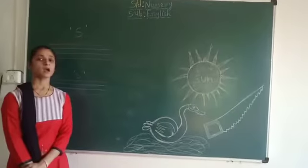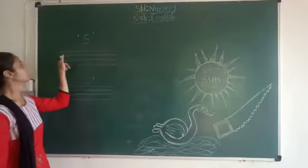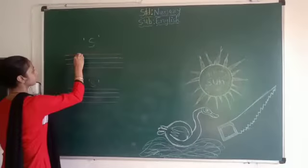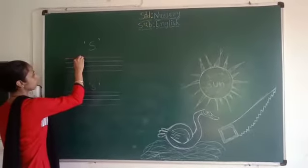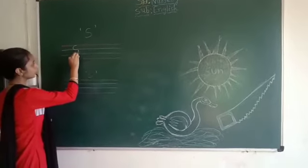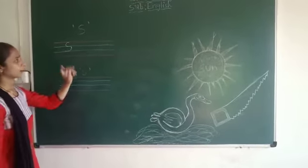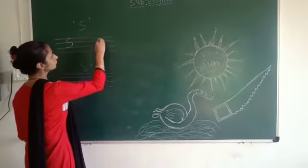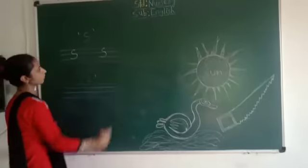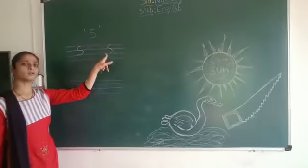Now children, how to write mama S? Touch red to blue. Look here — touch red to blue light, make it a half cup, then again make it a half cup. This is called mama S for sun. Write again one more time: touch red to blue light, make it a half cup, then again a half cup. This is called mama S for sun.